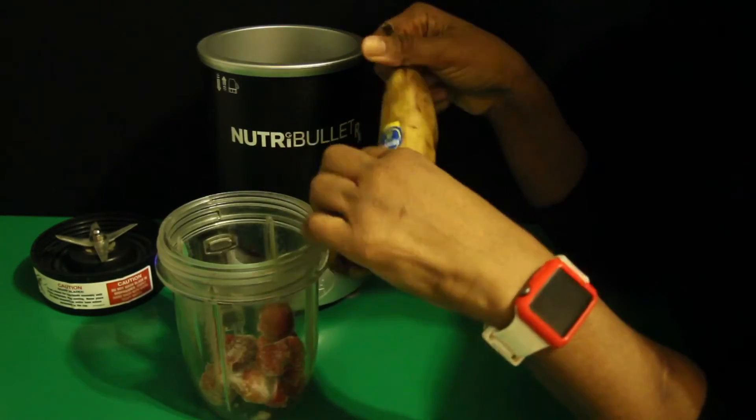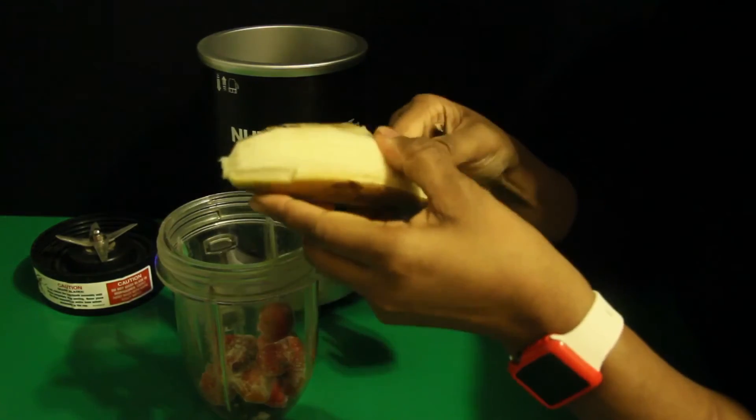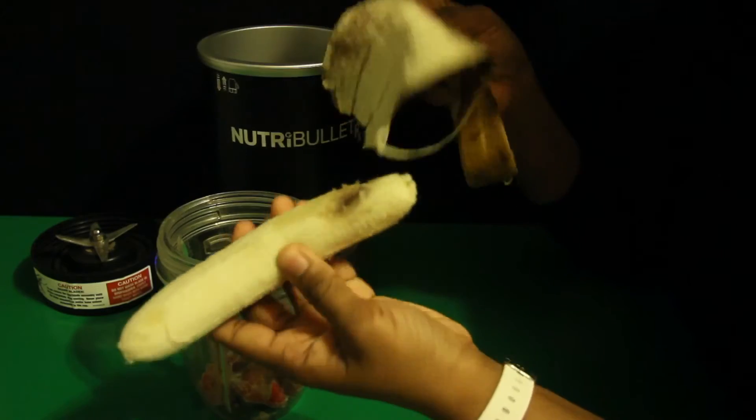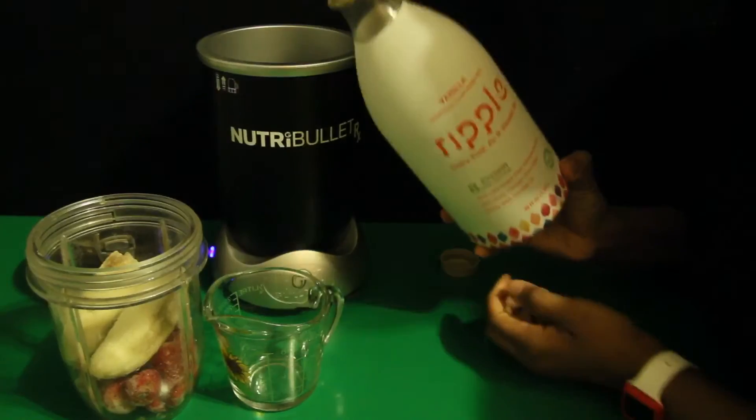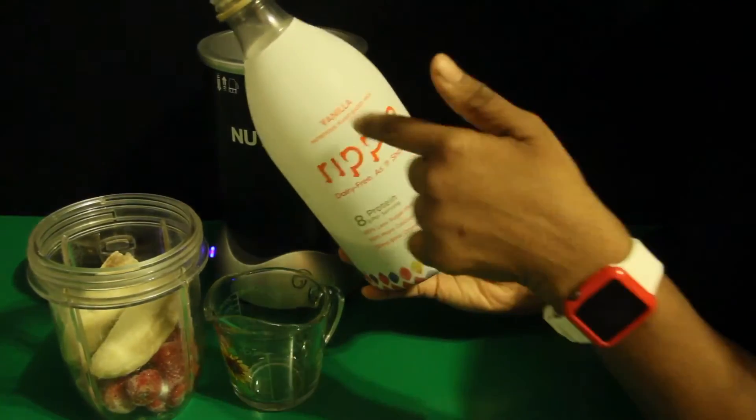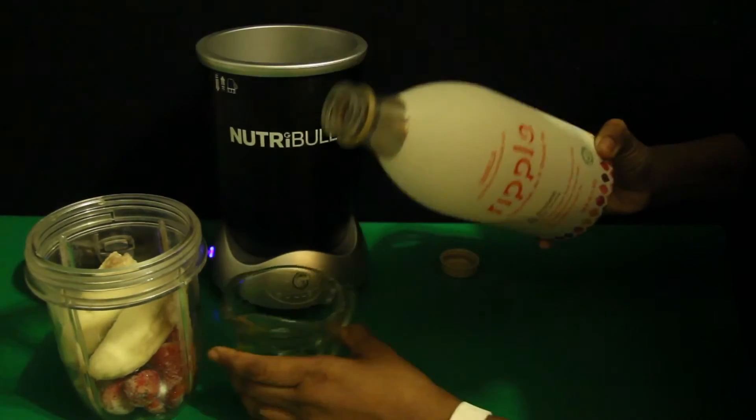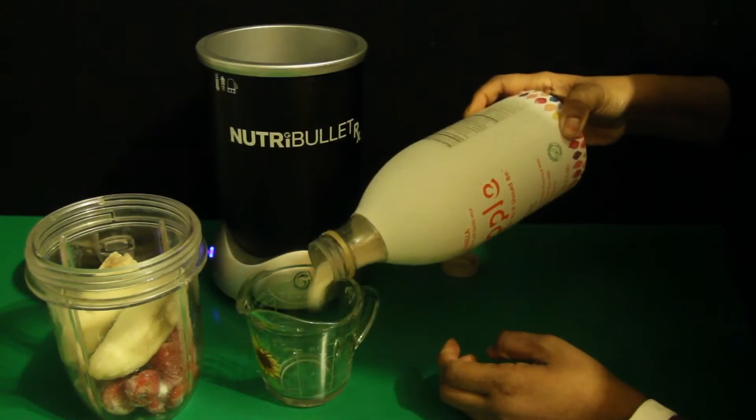Damn, this is more like black spots. Awkward. Last but not least, I will be using the vanilla Ripple milk, one cup. We might need a little bit more because we're dealing with frozen strawberries.